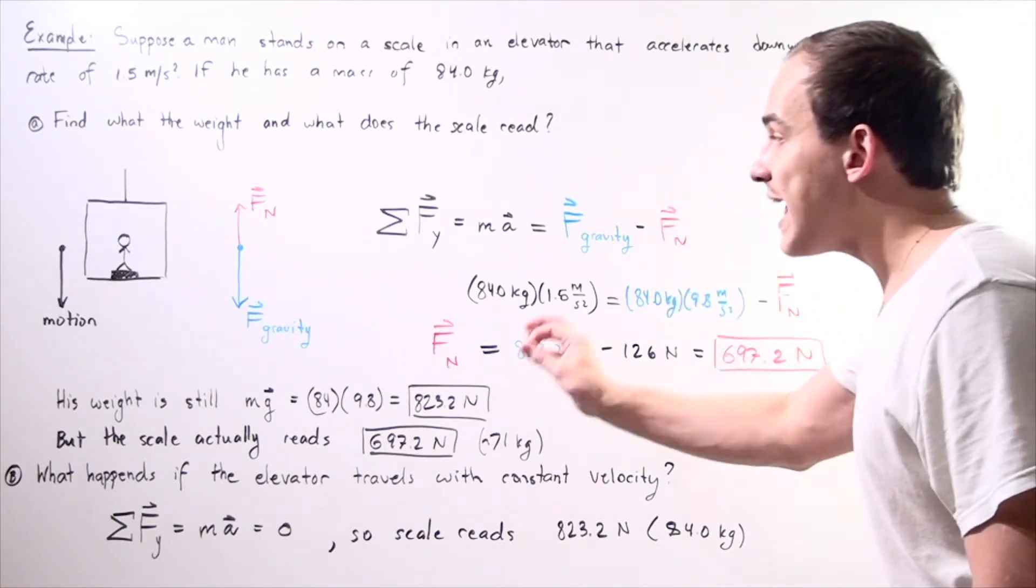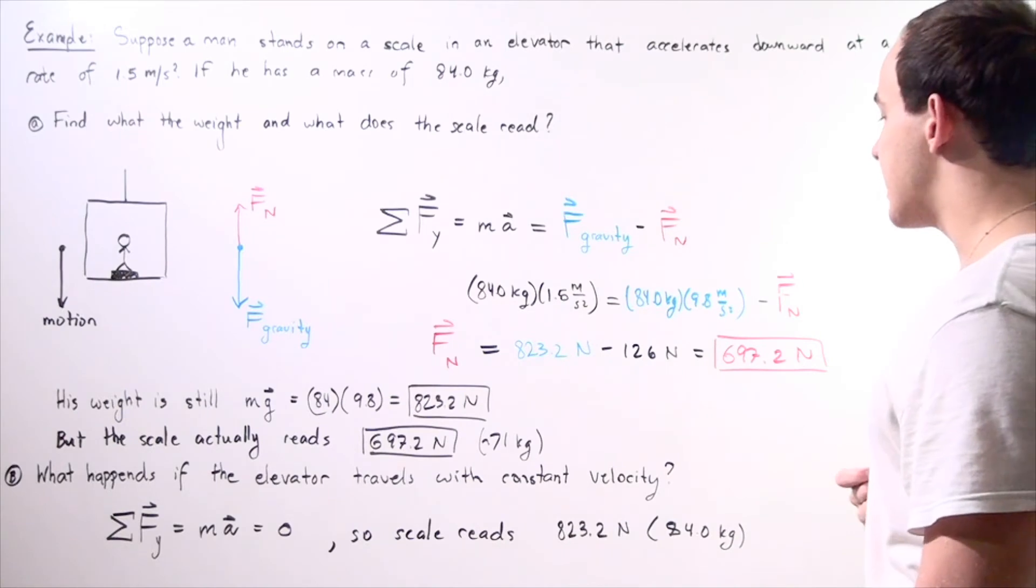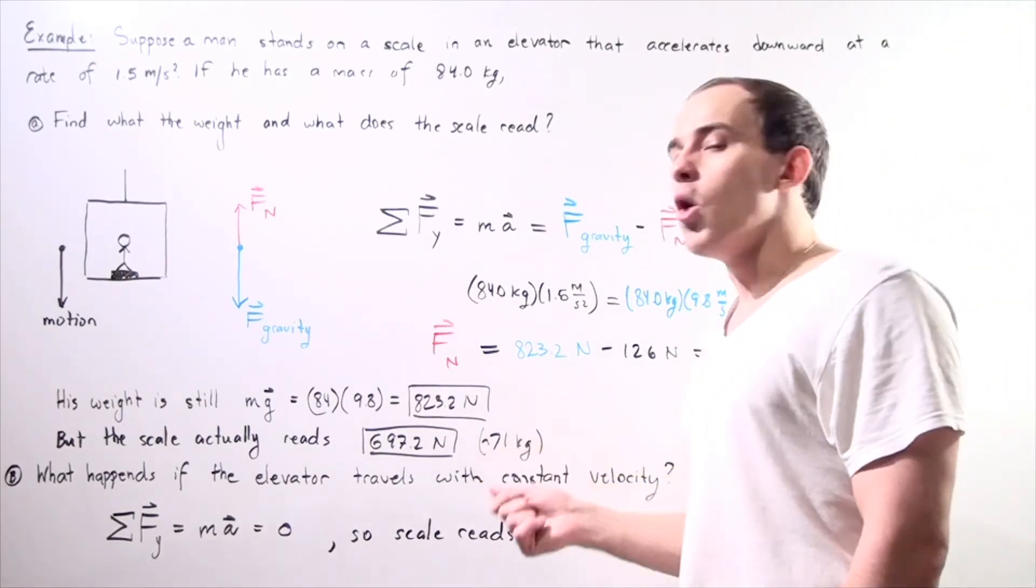The scale actually reads this force, and the mass that it reads is this force divided by 9.8 meters per second squared. So it reads approximately 71 kilograms.